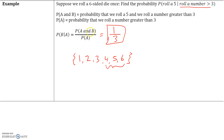The probability of A and B is the probability of rolling a five — there's only one. The probability of A, rolling a number greater than three — four, five, and six — that's three numbers, so probability is one-third. We focus on the fact that we've already rolled a number greater than three, so the sample space is limited to four, five, and six. Out of those, there is one five, giving us one-third.